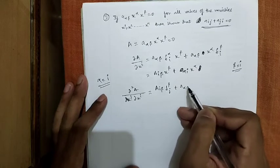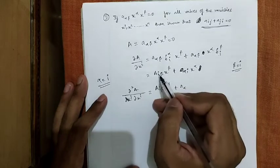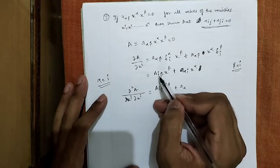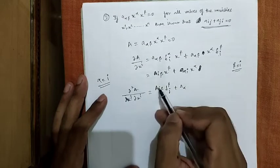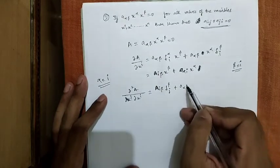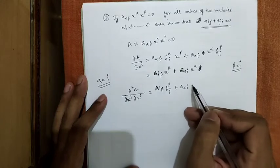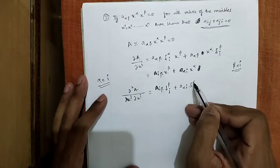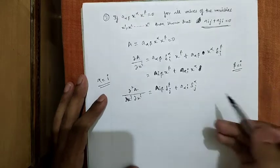Plus A_αi curl x_α over curl x_j, which equals to del_αj.